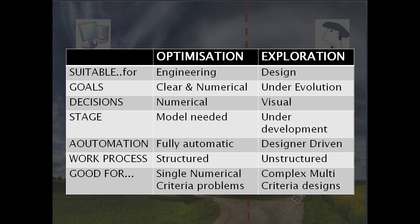In one, the decisions are often simplistic and numerical, and in the other, they are much more complex and are made on visual representation. Engineers need models to analyze, whereas designers keep evolving the model and need to make decisions well before the design is settled. Optimization processes are automated, and exploration processes are designer driven. Engineering processes are highly structured, and real life design processes are chaotic.